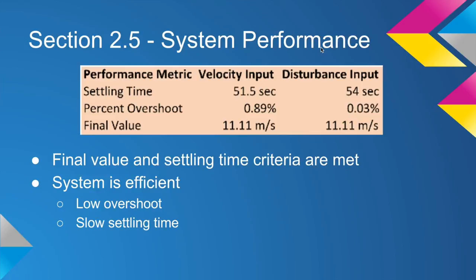By inspecting the system response graph to the input desired velocity and the disturbance, the performance metrics of the system can be found. For the initial input to the system, which was just the desired velocity, the settling time is 51 and a half seconds. This time is within our settling time goal of 60 seconds. The max velocity that the motorcycle system reaches is 11.21 meters per second, representing an overshoot of 0.89 percent.